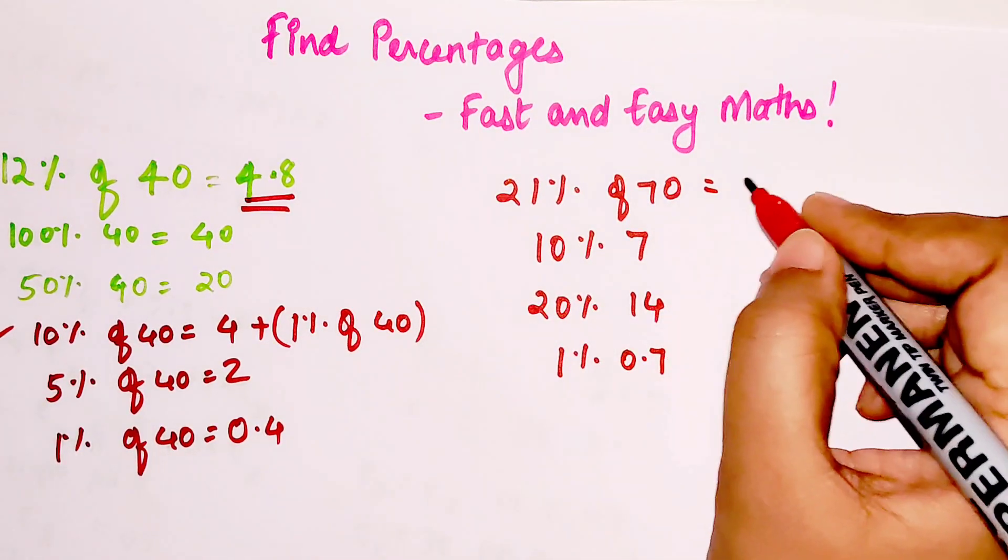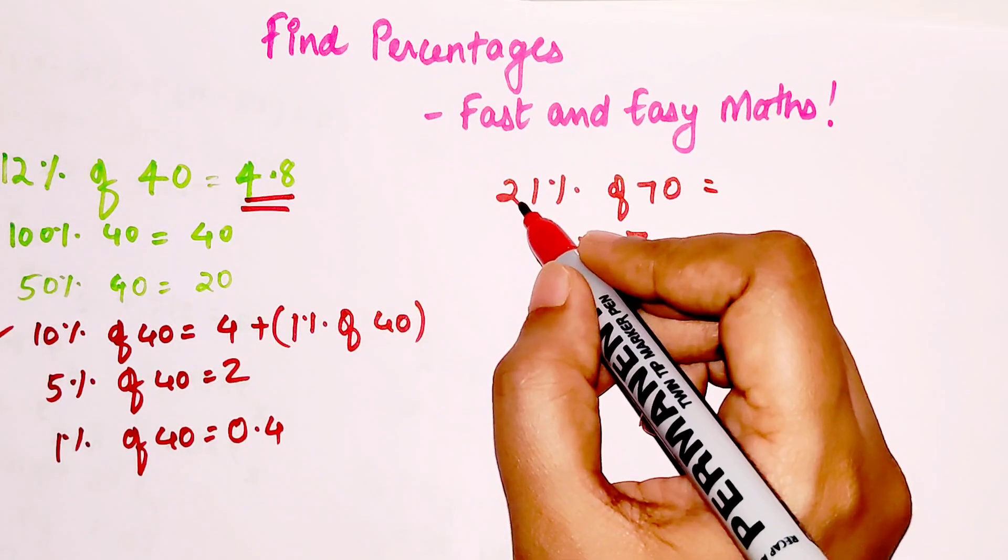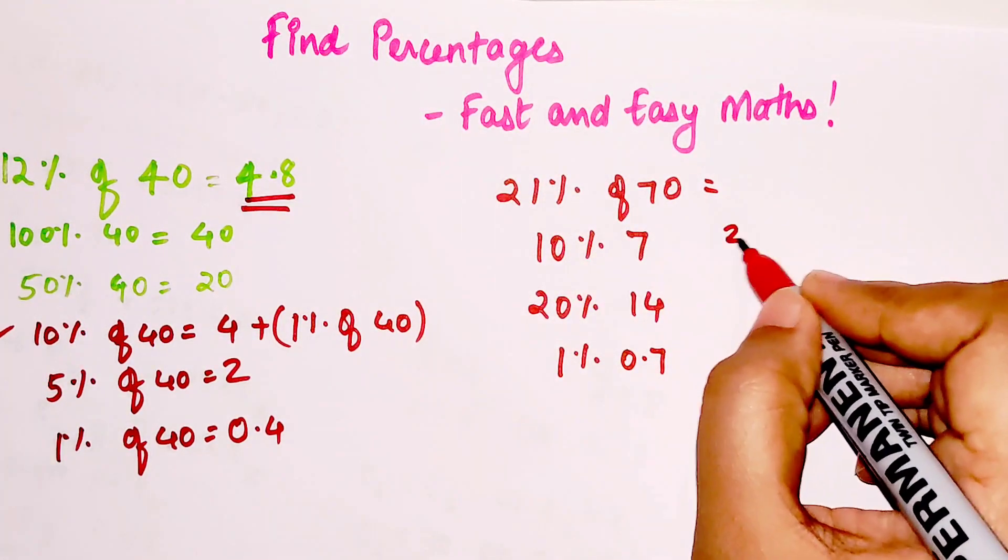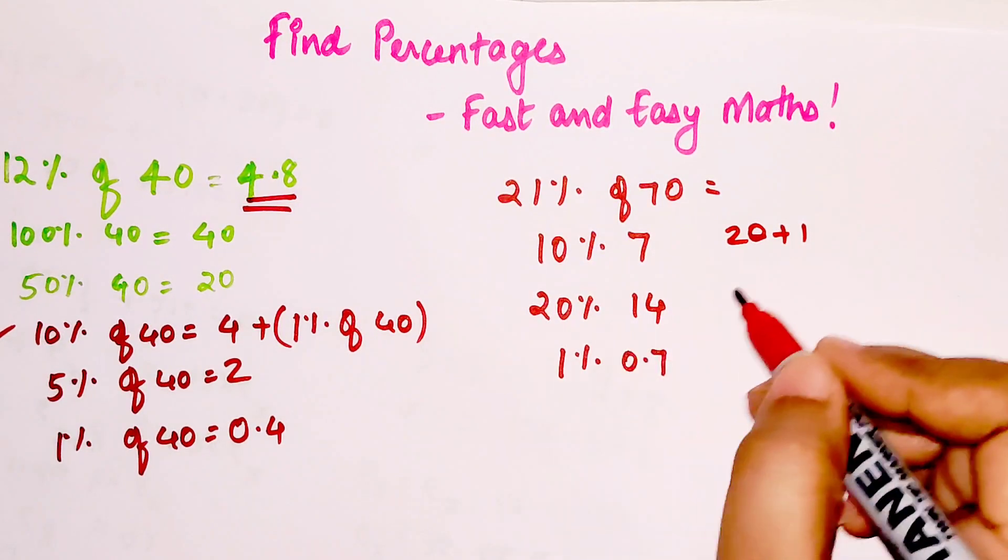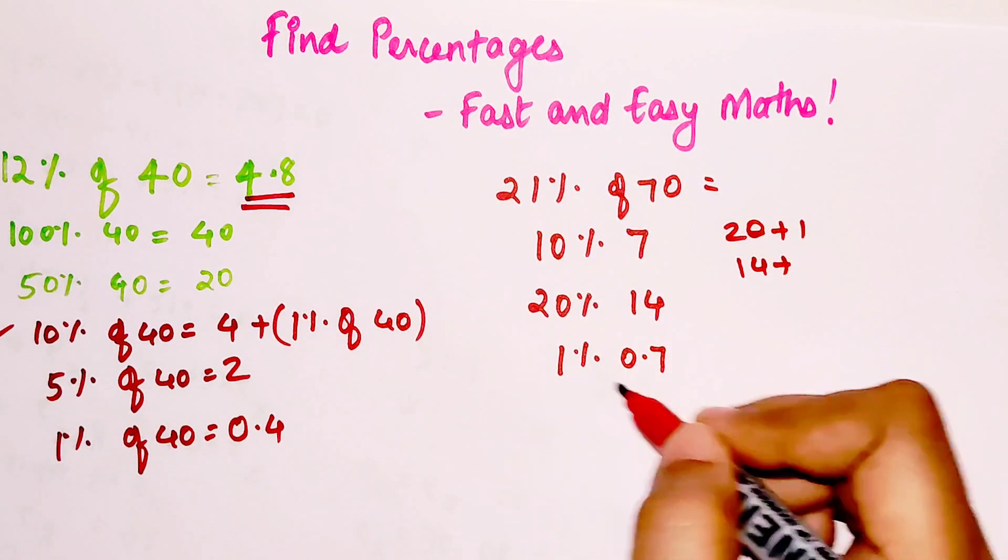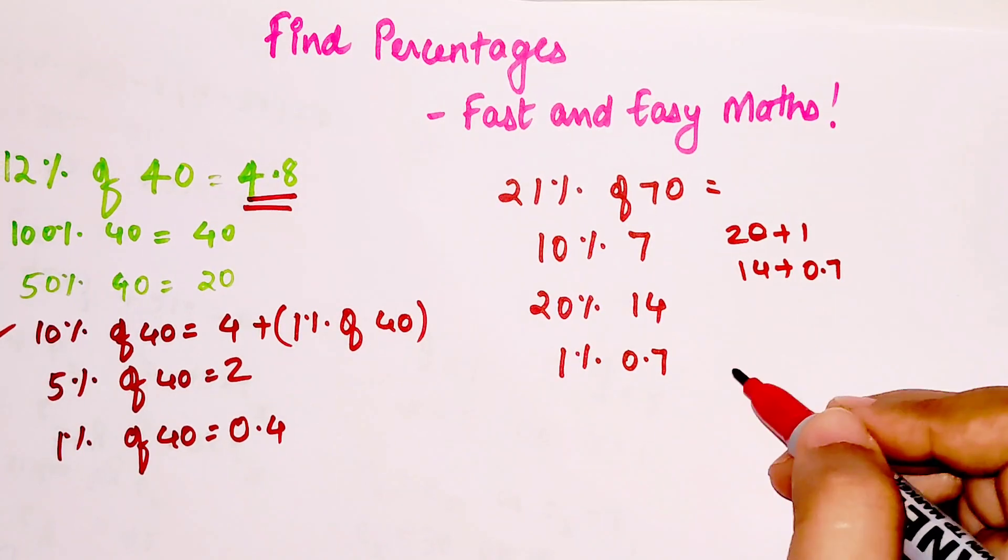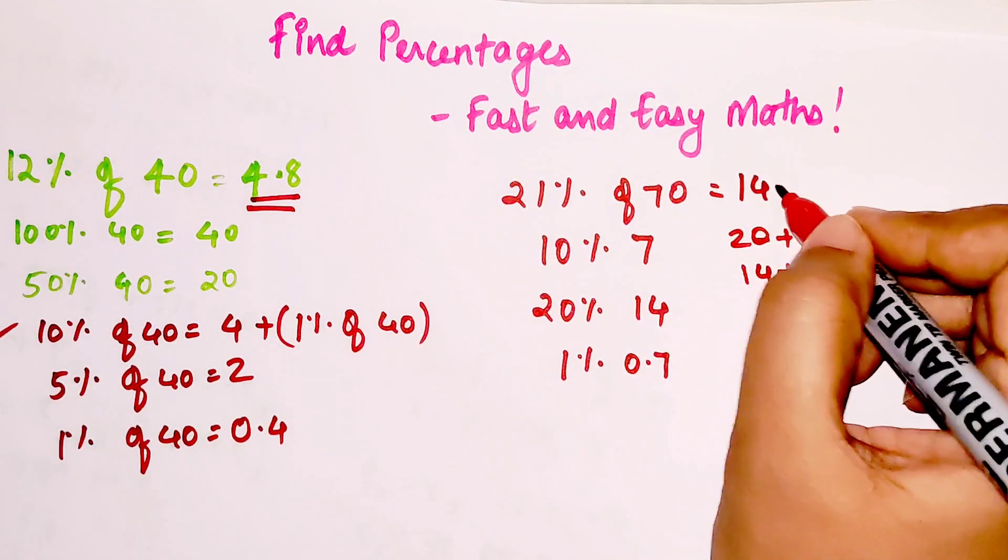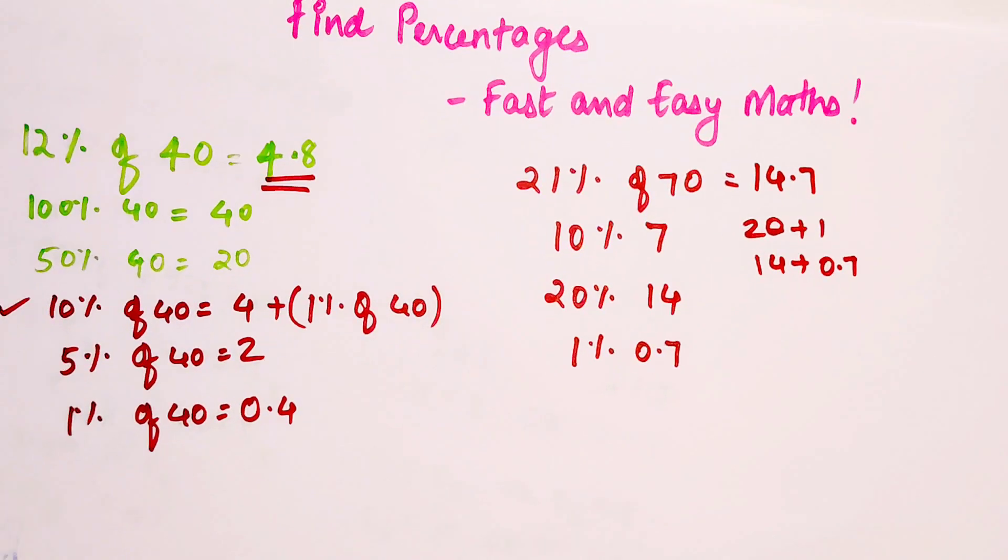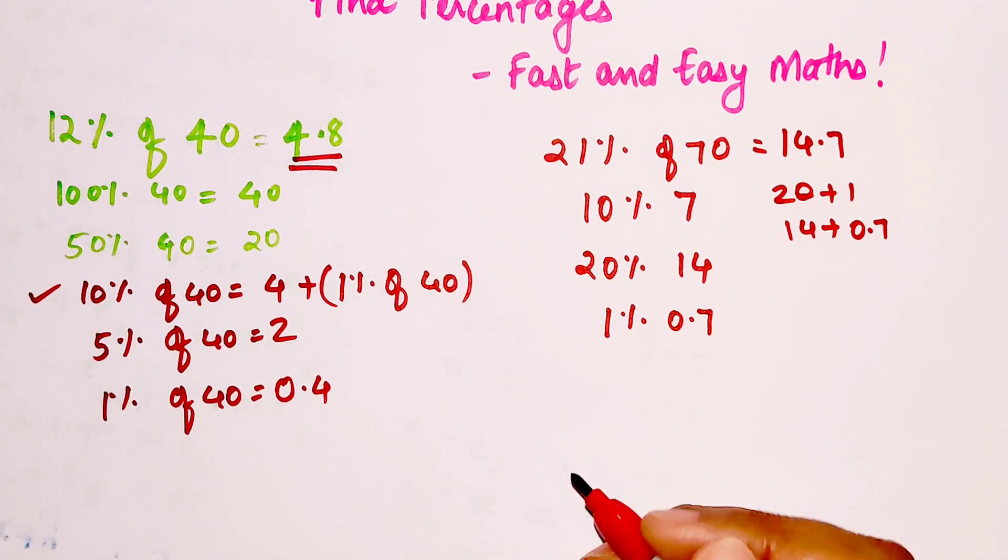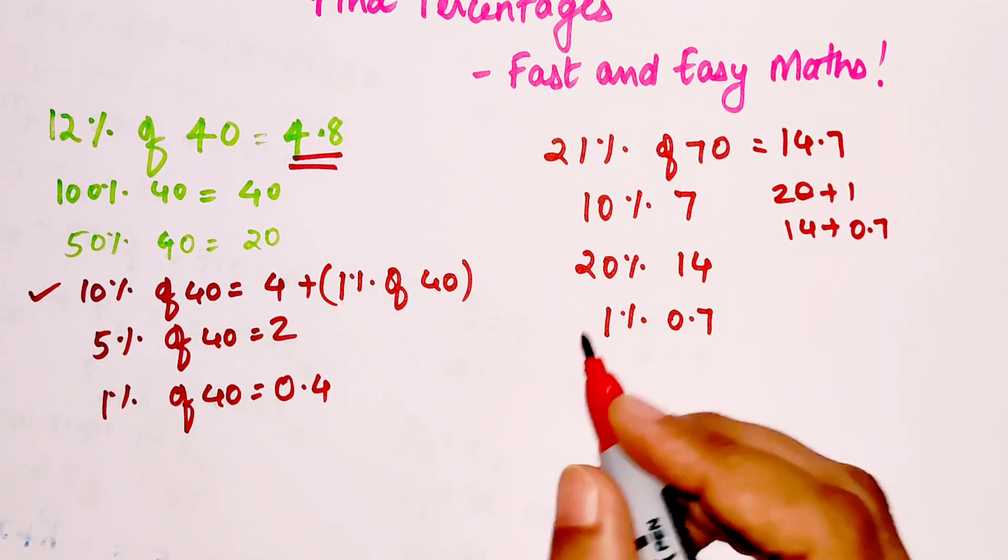So 1% will be 0.7. So here your final answer will be 20%, which is basically, see 21 can be written as 20 plus 1, so I'm going to write the answer for 20 percentage is 14 plus the answer for 1% which is 0.7, so your final answer will be 14.7.